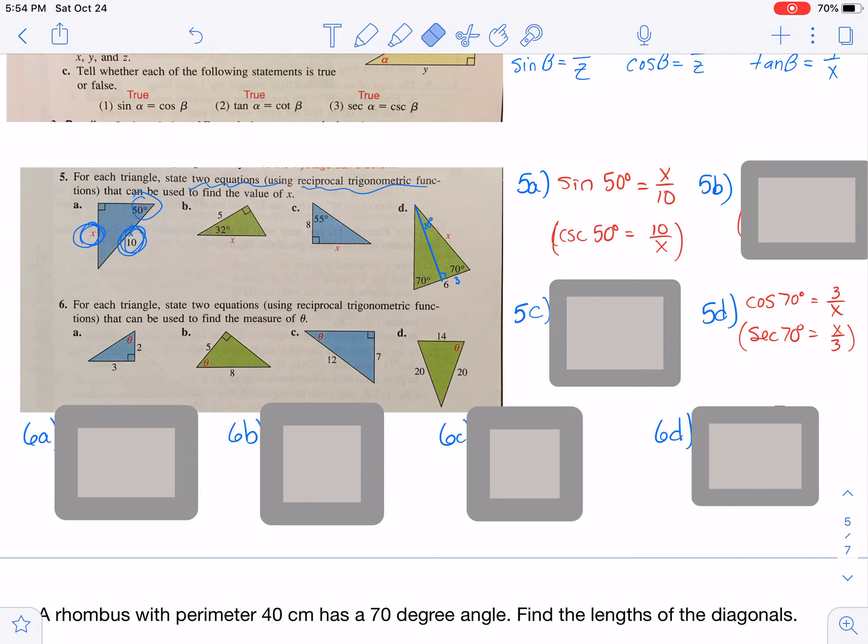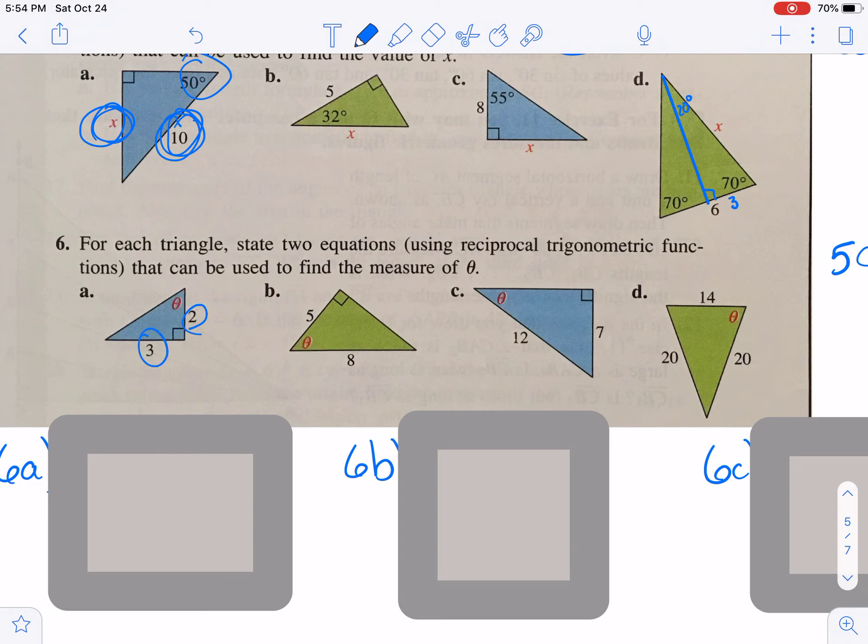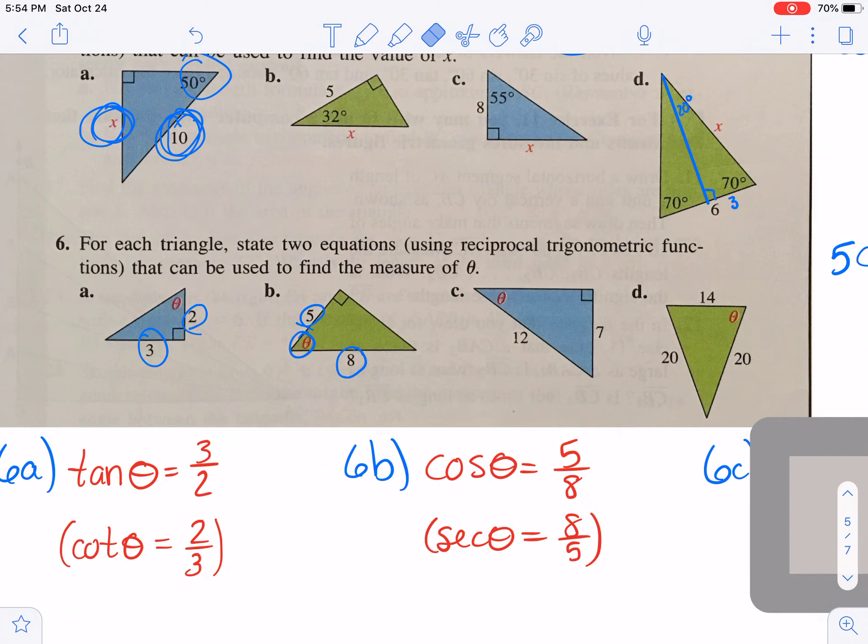For number 6, now we're looking for the angles. And they've given us then two sides. We could solve for the third side, but we don't have to. We can just use whichever ratio is going to go with the two sides that are given. So for letter A, you have a theta, and you have the opposite, and you have the adjacent. So that means you're going to use tangent. So tangent of theta would be 3 over 2. And then you can flip it to get the reciprocal. For 6B, our theta is here. And this, again, is the hypotenuse, but this time it's adjacent. So then we're going to say cosine of theta is equal to 5 over 8. And then you can use the reciprocal there to do secant.